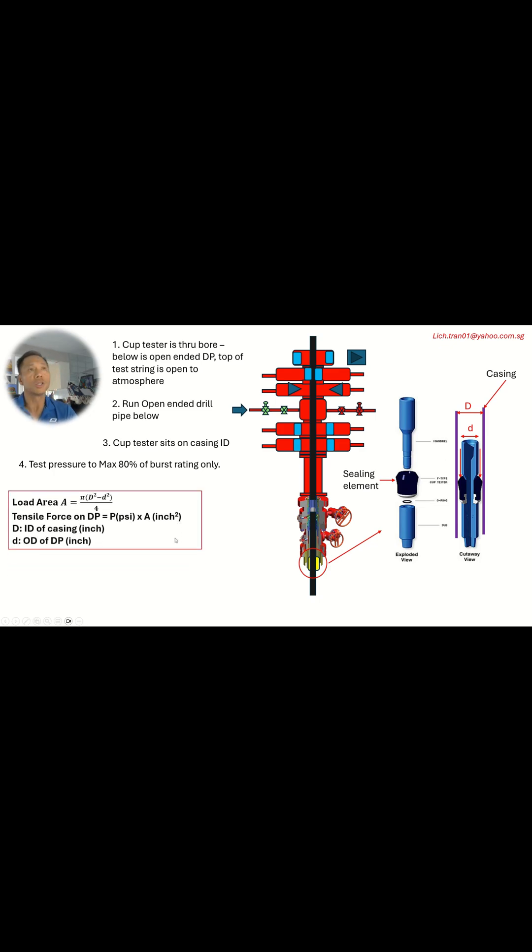So here is the formula how you use, how to work out the tensile load on the landing string, on the test string here. Use this formula here. The big D is ID of the casing and the small d is the OD of the drill pipe. So for example, if you have a 7-inch ID of the casing and the 5-inch OD of the test pipe in here, and you're testing up to 5,000 psi, you'll work out about 94,248 pounds tensile load on the test string.